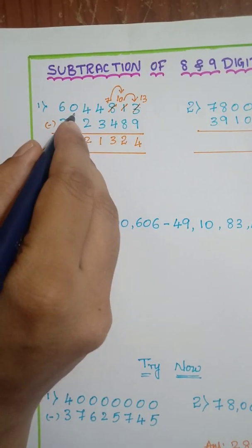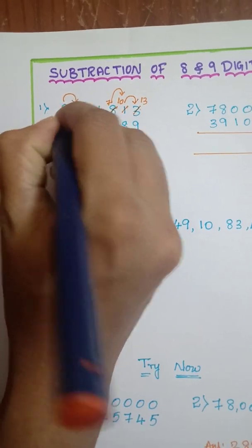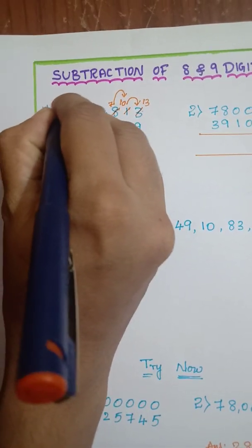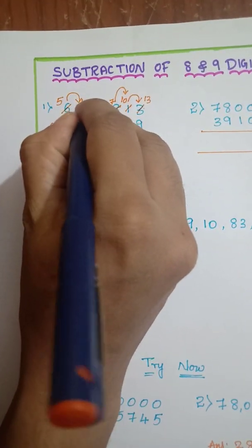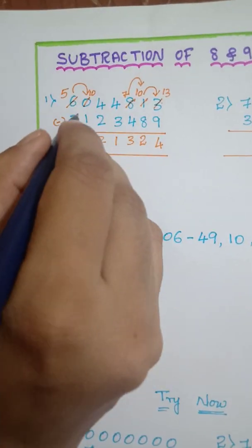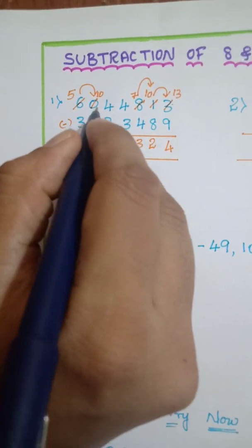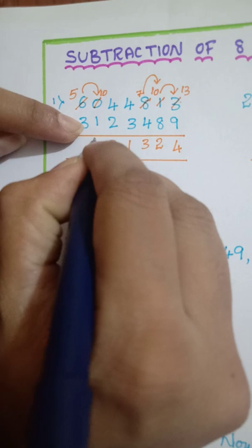And from 0, can you subtract 1? No. So what do you have to do? You have to take borrow. So 6 will become 5 and 0 will become 10. Here I am cancelling and writing for your clarity. So if you write like this, you won't get any confusion. 10 minus 1 is 9.